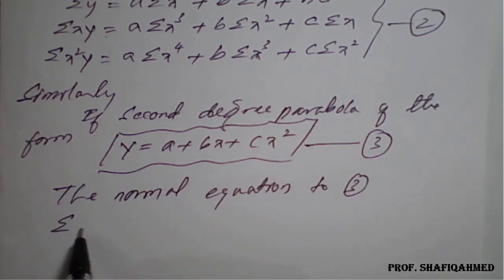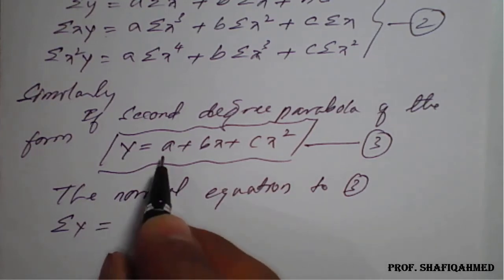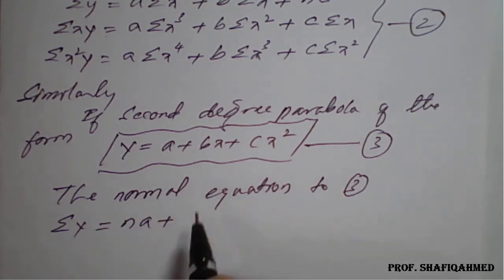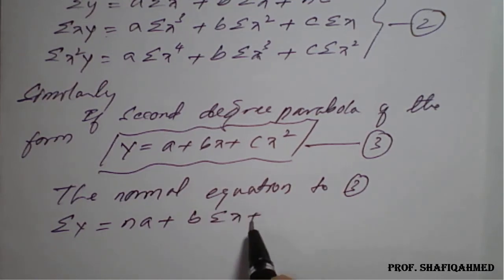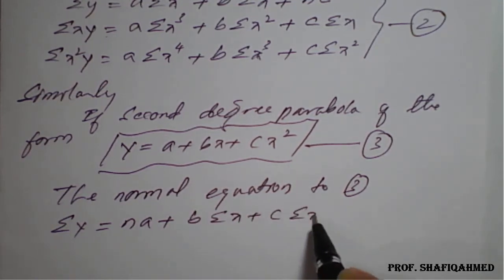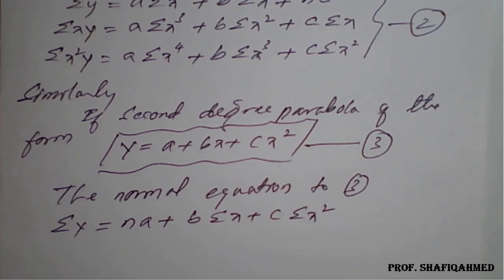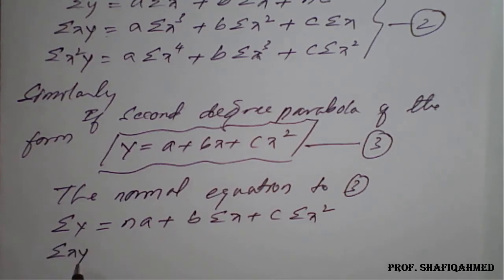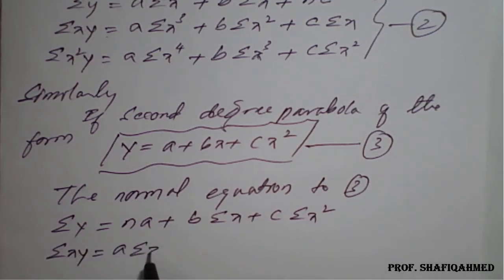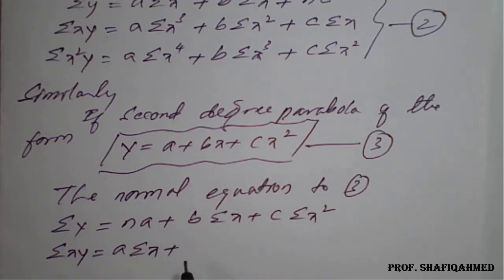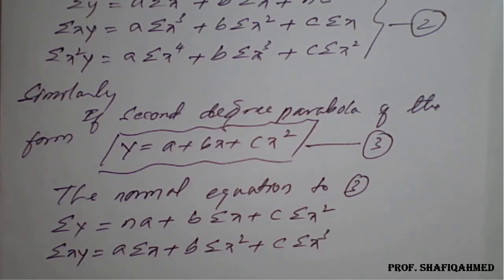Multiply summation on both sides: summation y = na + b·(summation x) + c·(summation x²). Then multiply x on both sides — the first variable is x — giving: summation(xy) = a·(summation x) + b·(summation x²) + c·(summation x³). Once a variable appears on multiplication, remove n.